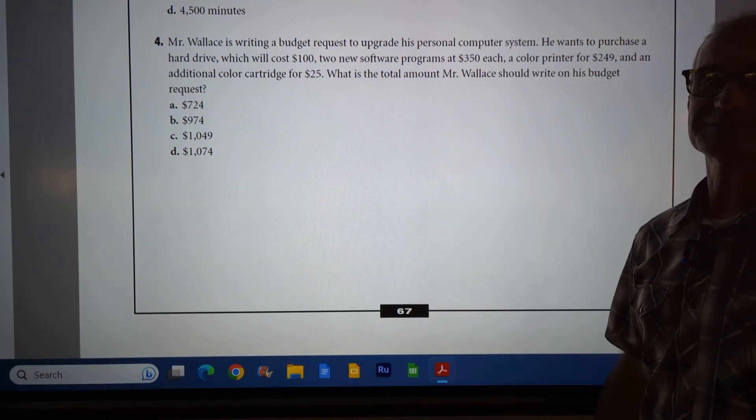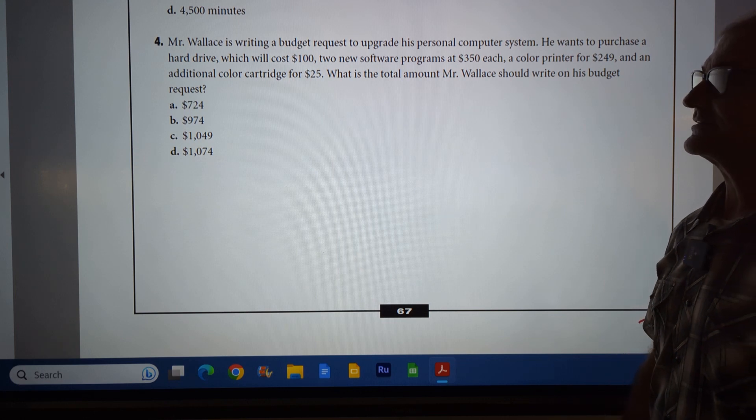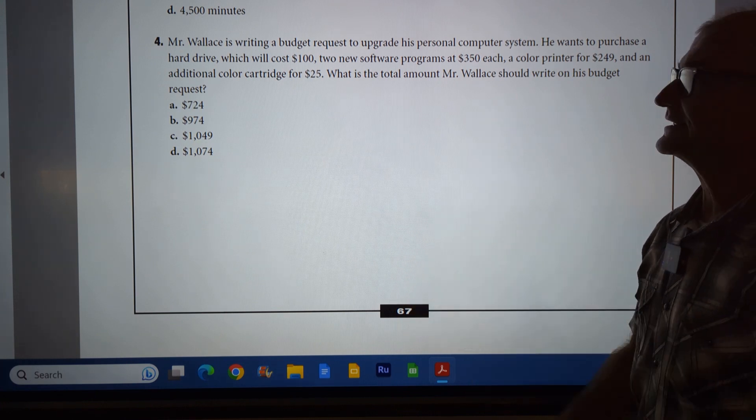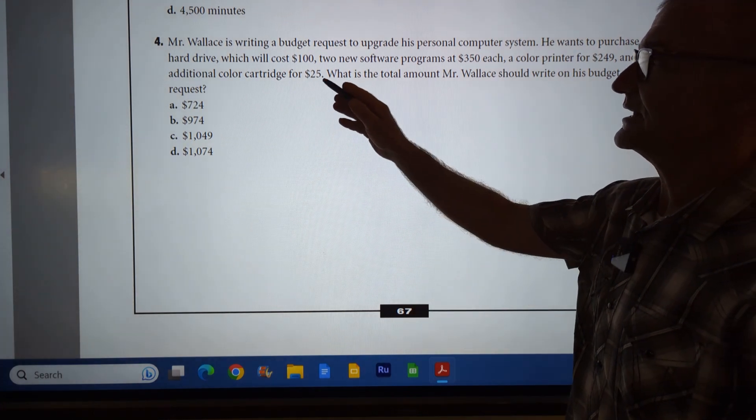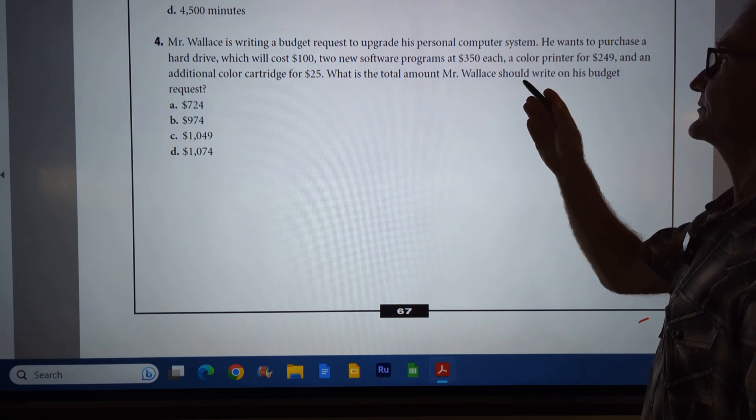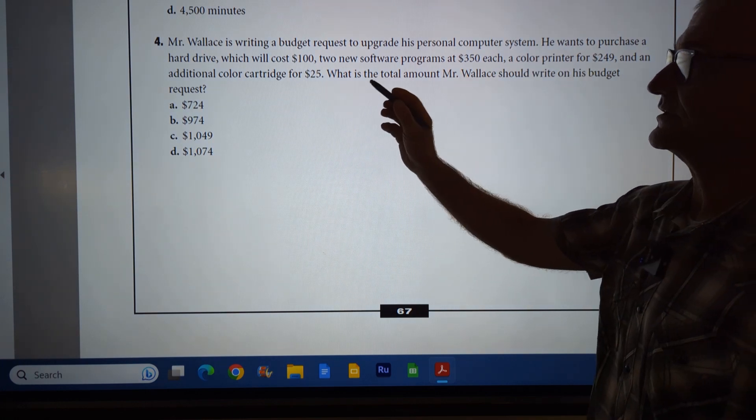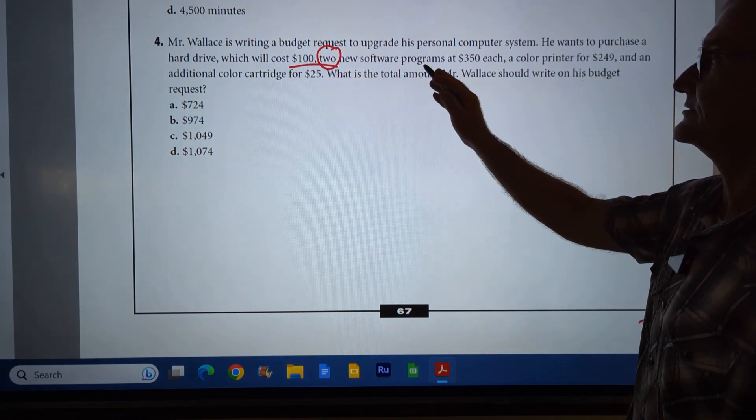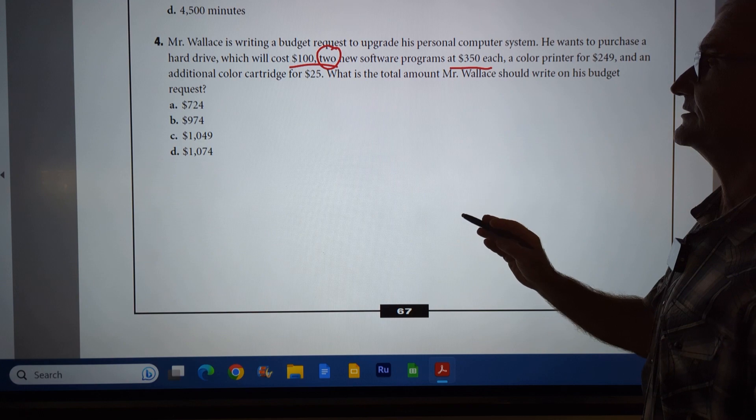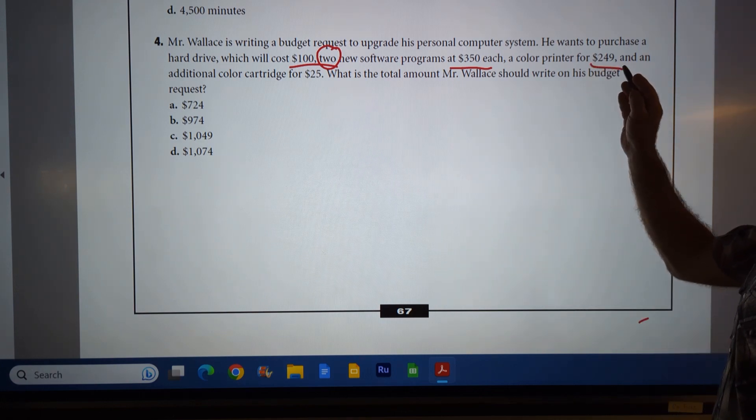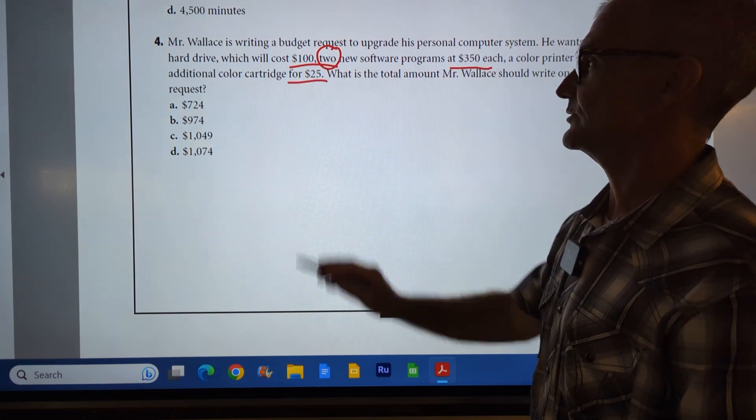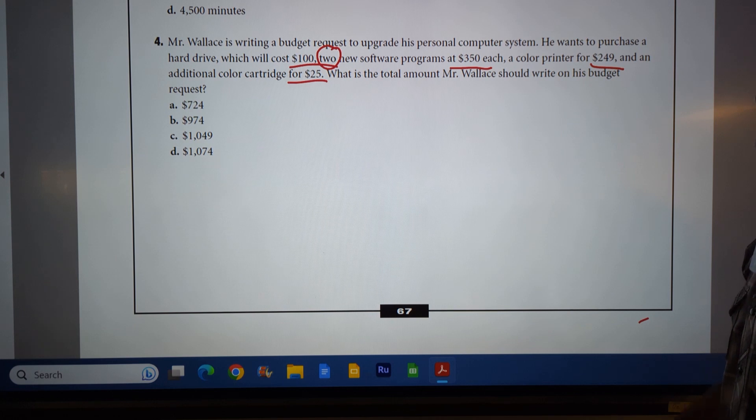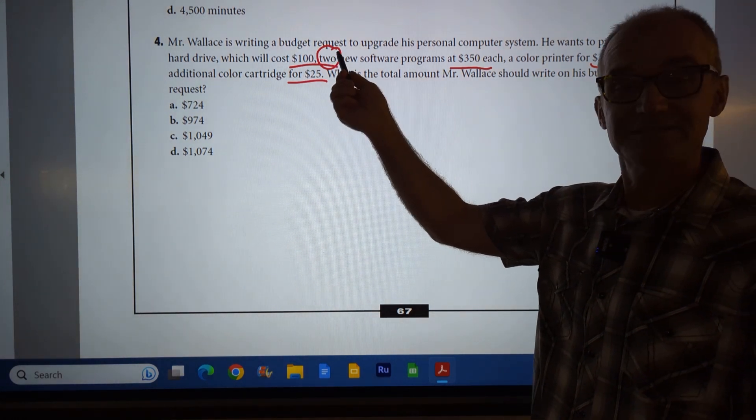Okay, problem number four. Again, pause the video, do the problem, and watch how I do the problem. Make sure you mark up the problem as much as you can, really decoding and pulling out the key numbers. Mr. Wallace is writing a budget request to upgrade his personal computer. He wants to purchase a hard drive, which costs $100, two new software programs for $350, a color printer for $249, and an additional color cartridge for $25. What's the total amount Mr. Wallace should write on his budget?